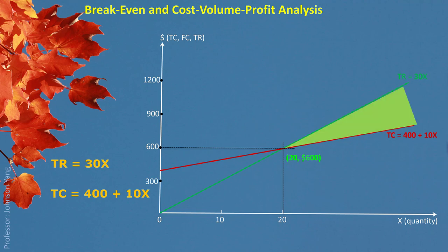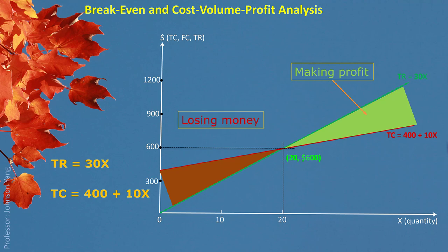When Eric produces birdhouses exceeding 20 units, he starts making profit — that's the green area. With that scale of production, Eric is making profit. But if his production is less than 20, the break even point, he is not going to make money. He is actually going to lose money if his production level is low. So understanding break even analysis and knowing where your break even point is, is important.